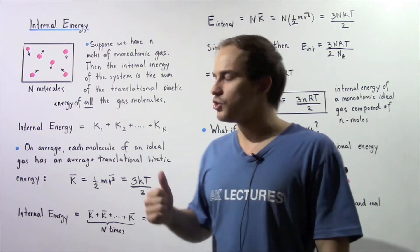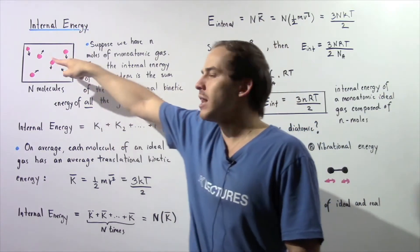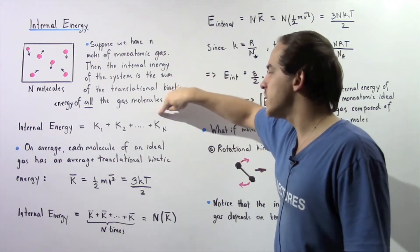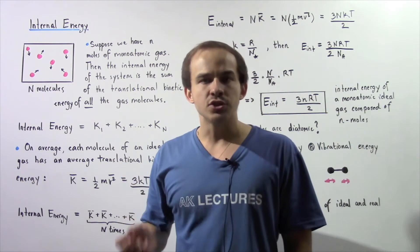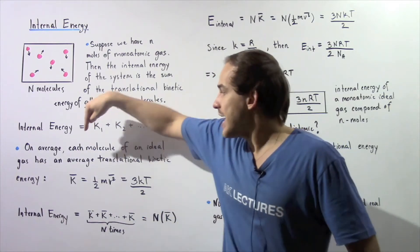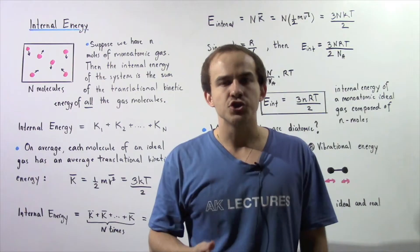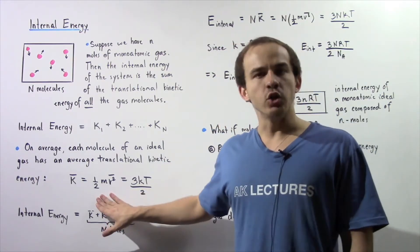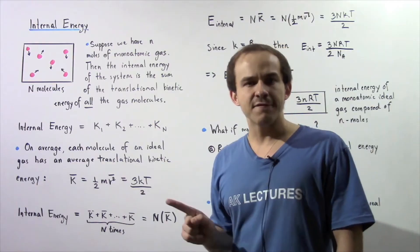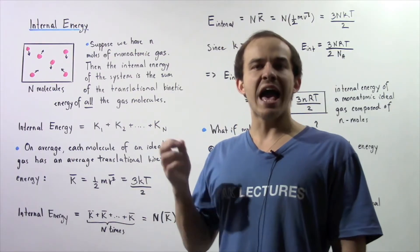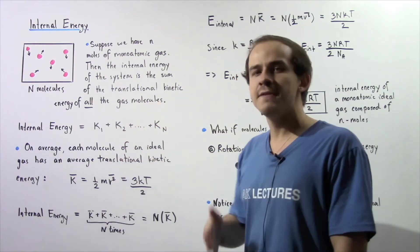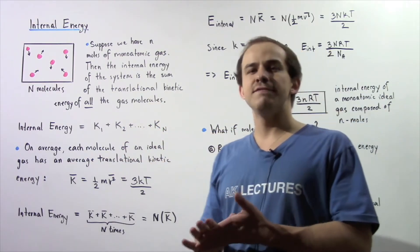The internal energy is equal to K1, the translational kinetic energy of molecule 1, plus K2, the translational kinetic energy of molecule 2, all the way up to KN, the translational kinetic energy of the Nth molecule. Recall that on average, each molecule of an ideal gas has an average translational kinetic energy given by the following equation: K̄ = ½mv² = (3/2)kT, where k is the Boltzmann constant and T is the temperature in Kelvins.